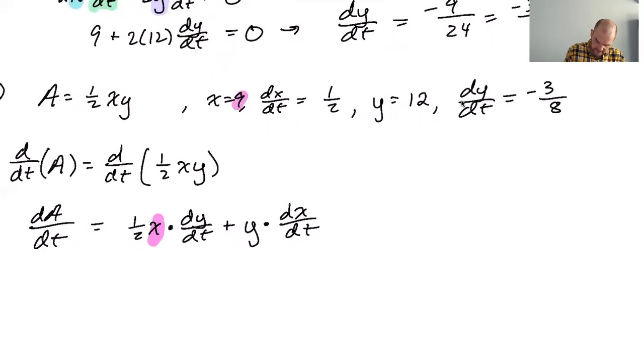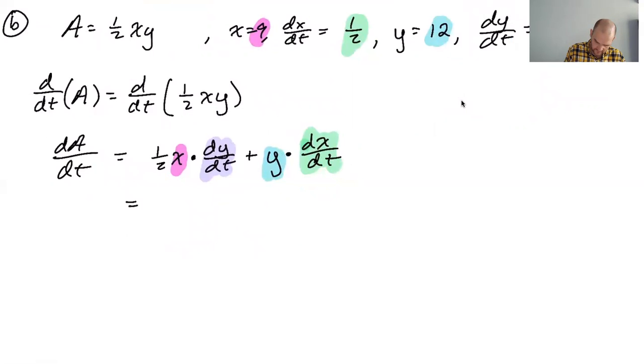So we get dA/dt. The rate of change of the area of the triangle is first derivative of the second plus second derivative of the first. And we just know everything to plug in here. We got X is 9. We got dy/dt is negative 3/8. We got Y is 12. And then dx/dt is one half. So let's sub in those values. One half. You know, I forgot a one half here. The derivative of the first is one half dx/dt. Not bad. Because the first function is one half X. So the derivative of that is one half dx/dt. Good. I caught it at the last second, but I was about to get it wrong.